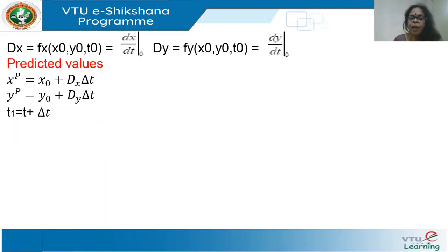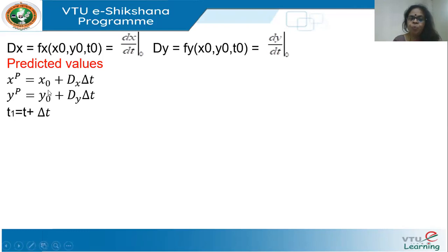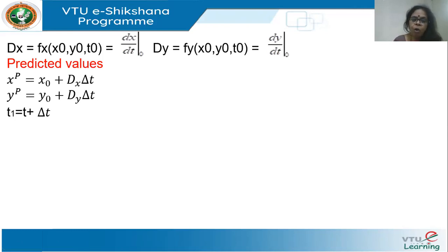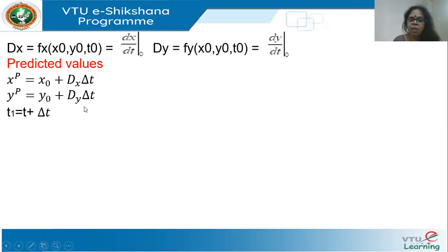Modified Euler's has an intermediate prediction step. We predict x_p (p stands for prediction) as x-naught plus dx times delta-t, which gives the change in x. Since dx is dx/dt, multiplying by delta-t gives the incremental change in x. Similarly, we find y_p, the predicted value of y, as y-naught plus (dy/dt) times delta-t. This forms the first step of the modified Euler's method.